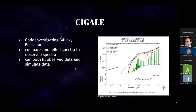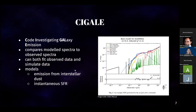For my project, CIGALE will use the emission spectra of the objects in my data set and model emission from interstellar dust, instantaneous star formation rate, stellar mass, and element abundance. On the right is a figure from the CIGALE manual demonstrating an energy distribution in my output. In particular, it illustrates emission in a galaxy that may come from a few different sources, like nebulae, dust, and active galactic nuclei — essentially black holes.